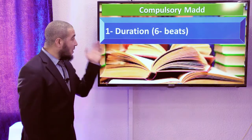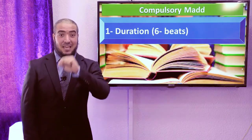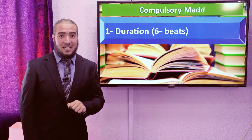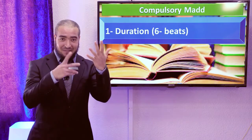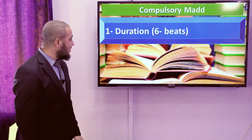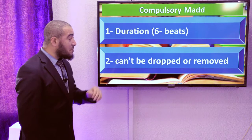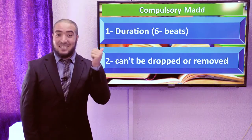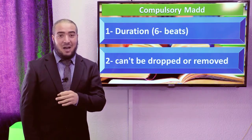What is the duration of Compulsory Mad? Six beats. How can you measure it? By opening six fingers or closing them. It cannot be dropped or removed — you must make it six beats. Do you remember the word 'must'? You must make it six.